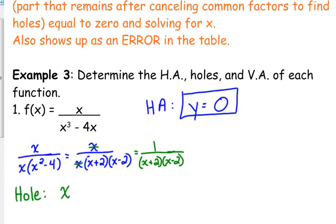Our canceled factor was x. So where that equals zero, that's x equals zero. We need to find its y value. We plug it into the simplified version. So we've got one over zero plus two times zero minus two. Well, that's one over two times negative two, which is negative one fourth.